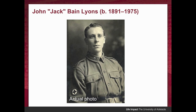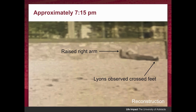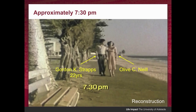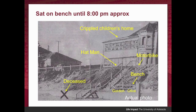This is an actual photo of Jack Lyons. What they saw and reported was a man lying with his head up against the wall on the beach. They observed his feet were crossed and the man raise his right arm and then flop it down. They simply thought the man was drunk and walked on. Then roughly around 7:30, a young couple — Gordon Straps and Olive Neal — came to the beach and sat on a bench just a few steps away from where the man was found dead. Their motorbike was parked just above them.